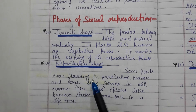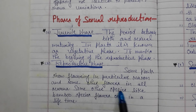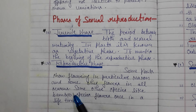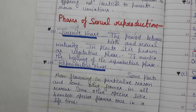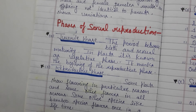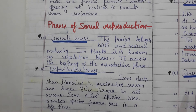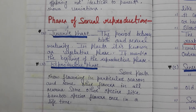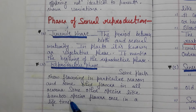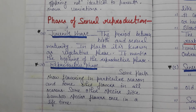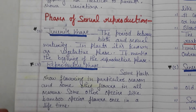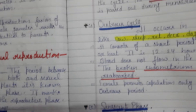The next phase is the reproductive phase. Some plants show flowering in a particular season, and some other plants flower in all seasons. Those that flower throughout the year are called continuous breeders, and those that flower only in a particular season are called seasonal breeders. Just like bamboo, some species flower only once in their lifetime.